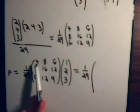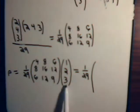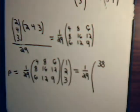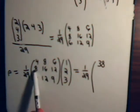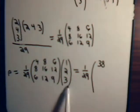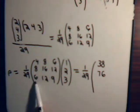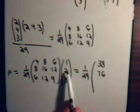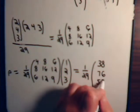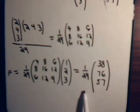And this will equal 1 over 29 times, and here we have 4 plus 16 plus 18, that is 38. Then here we have 8, 32, 36, that is 76. Then here we have 6, 24, 27, that is 57. And there's our projection.